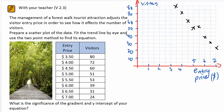In V2.3, you're asked to plot the entry price against number of visitors going to a forest walk. You can see there seems to be a strong negative correlation — as the price increases, the number of visitors decreases.